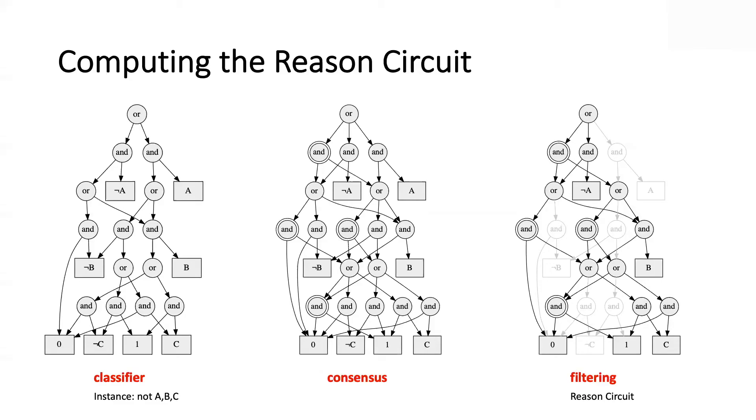And the second transformation is called filtering, where we actually take the consensus circuit and the instance and then drop some of the nodes. Those are the ones that are shaded here. And then we end up effectively getting the reason circuit for the decision on that instance. The interesting thing is each one of these transformations, that is computing the consensus circuit and then computing the filtered circuit, both of these are linear time operations. So basically, obtaining a reason circuit from a classifier and an instance is a linear time operation, assuming that the classifier itself is in a particular form, as we mentioned earlier.